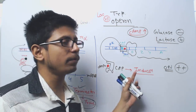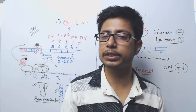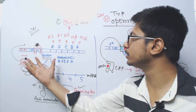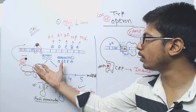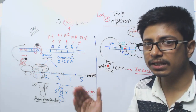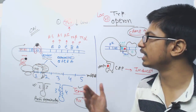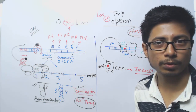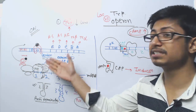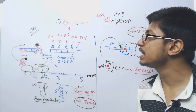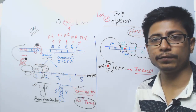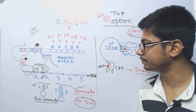This type of catabolite repression is not found in the tryptophan operon, because that operon model is simpler — it is a synthesis-type operon with negative regulation, and no such nutrient-based modulation occurs.